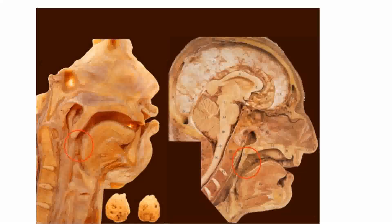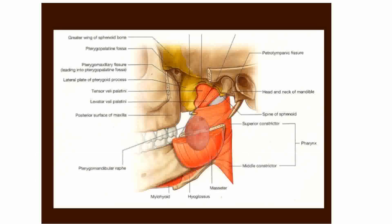This is the cadaveric picture showing the sagittal section of the entire head and neck, with the location of the tonsil marked. You can also see the soft palate marked in this section. Additionally, this picture shows the two constrictors — the superior and the middle constrictor of the pharynx.